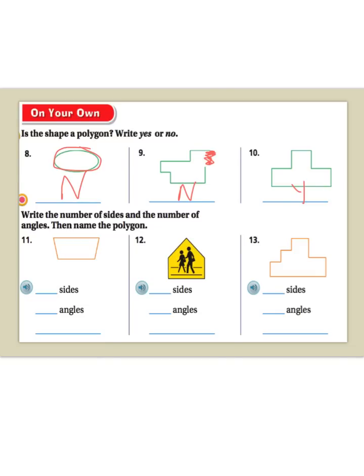For 11, 12, and 13, we're going to name this polygon by figuring out how many sides and angles that each one of them have. So 11, we have four sides, four angles. For 12, we have five sides and five angles. And 13, we have ten sides and ten angles. So to name these, for 11, it's a quadrilateral. I'm going to write quad because it's kind of hard to write on this. For 12, we have a pentagon. For 13, we have a decagon.